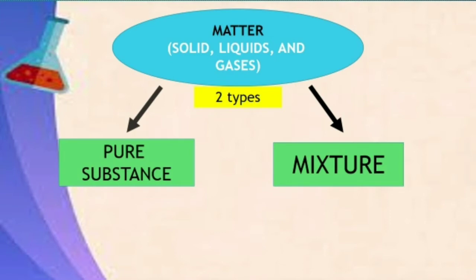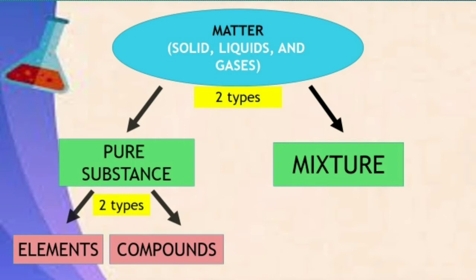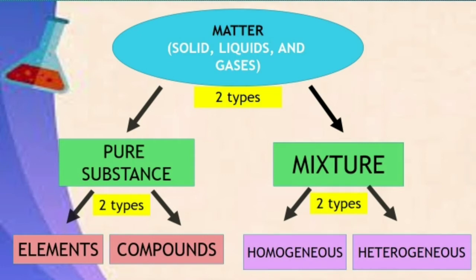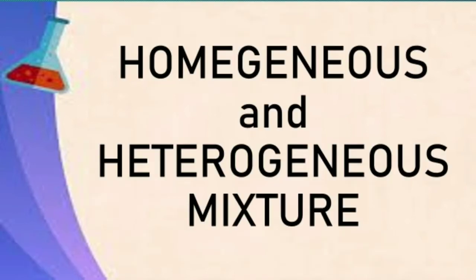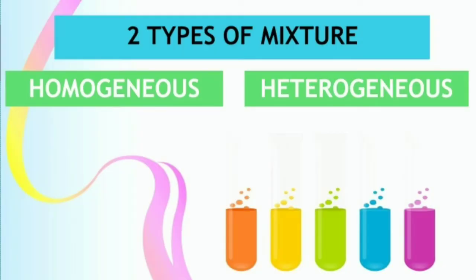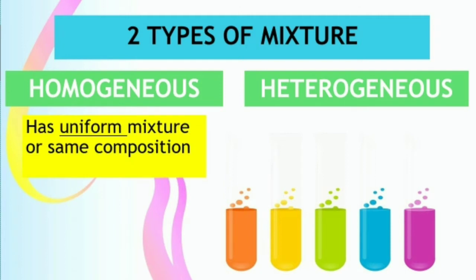There are two types of pure substance: elements and compounds. On the other hand, mixture has two types as well: homogeneous and heterogeneous mixture. Today we will be talking about homogeneous and heterogeneous mixture. So what is the difference between them? Homogeneous is a type of mixture that has uniform composition, or the same composition throughout.